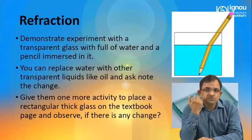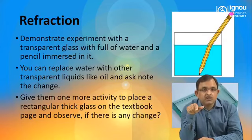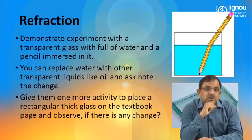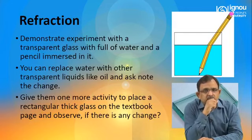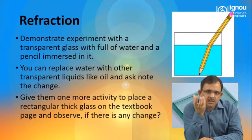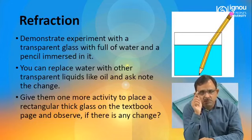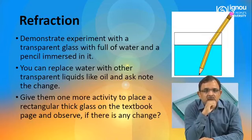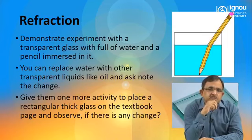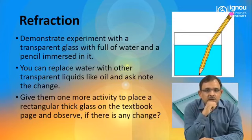From mirrors, let us move towards lenses. The phenomenon related to lenses is called refraction. In a mirror, light does not pass through; it gets reflected. But in lenses or other transparent media, light passes through. To introduce this, put a pencil in a glass or beaker filled with water and ask students to observe. They will tell you the pencil looks tilted or bent. Give them pencils of different sizes and let them check whether the observation is the same.